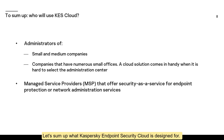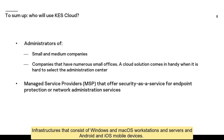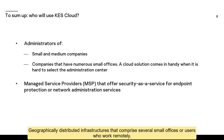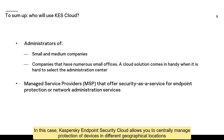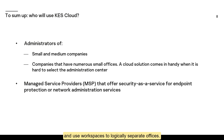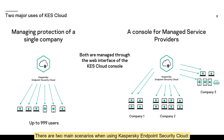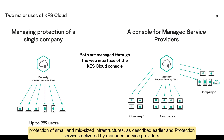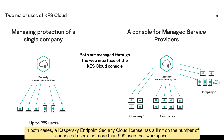Kaspersky Endpoint Security Cloud is designed for infrastructures consisting of Windows and macOS workstations and servers, and Android and iOS mobile devices. It also suits geographically distributed infrastructures comprising several small offices or users who work remotely — allowing centralized management of devices in different locations and using workspaces to logically separate offices. The two main usage scenarios are protection of small and mid-sized infrastructures and protection services delivered by managed service providers, with a limit of no more than 999 users per workspace.